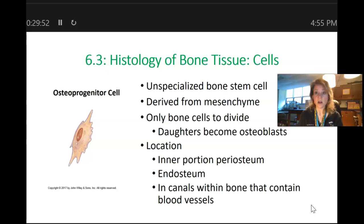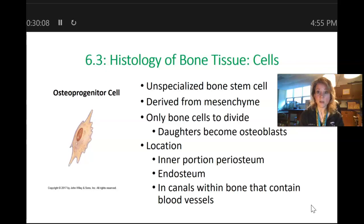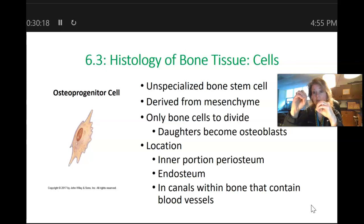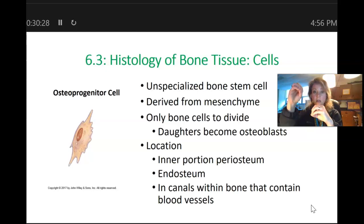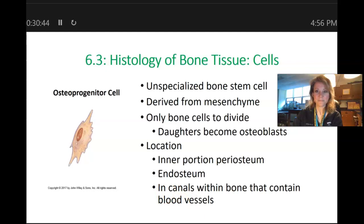Osteoprogenitor cells are kind of like the cells of the stratum basale — they are the only cells that are going to divide in the bone, just like the stratum basale cells are the only cells to divide in the epidermis. When an osteoprogenitor cell divides, one daughter cell stays in the endosteum or inner lining of the periosteum to continue dividing and making more cells as needed, while the other moves on to develop into a cell called an osteoblast. You will also find osteoprogenitor cells in canals inside the bone that contain blood vessels, called canaliculi.